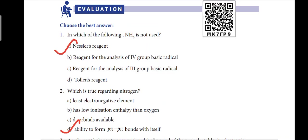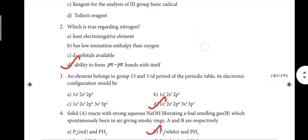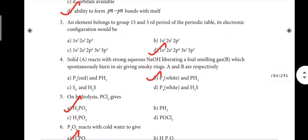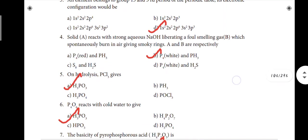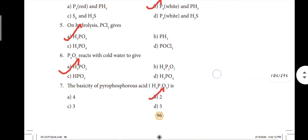First one-word answer: option D - ability to form pi-pi bonds with itself. Third one: option D - 1s2 2s2 2p6 3s2 3p3. Fourth one: option B - P4 white and P4S3. Fifth one: option A. Sixth one: option A.